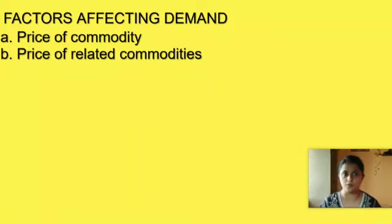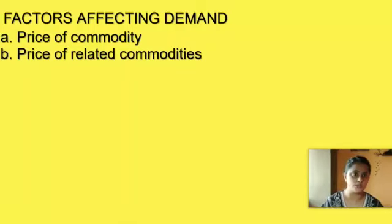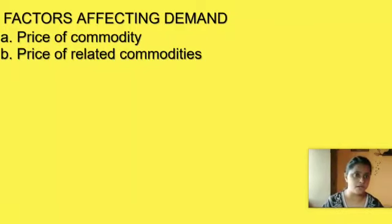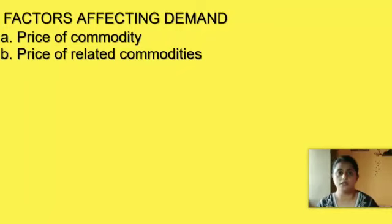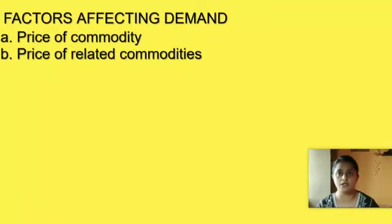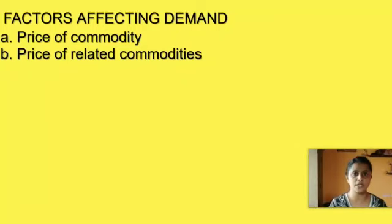The second factor is price of related commodities. There are two types of related commodities: substitutes, which can be used in place of one another, and complementary goods, which are used together. There is a positive relationship between price of good X and demand for good Y when they are substitutes. For example, tea and coffee are substitutes — an increase in price of tea will increase demand for coffee as people start consuming coffee.